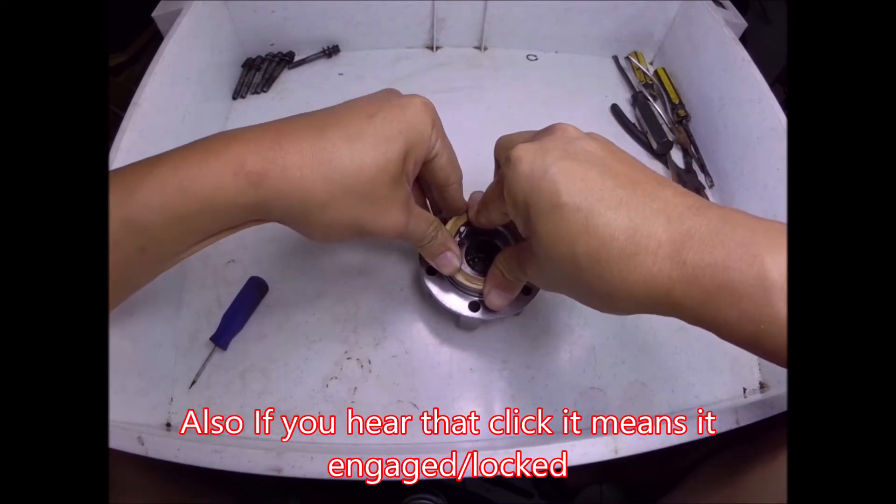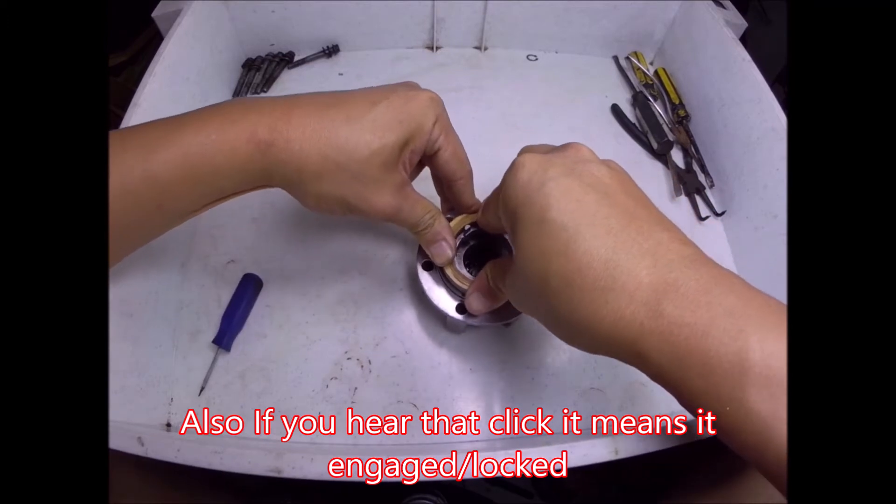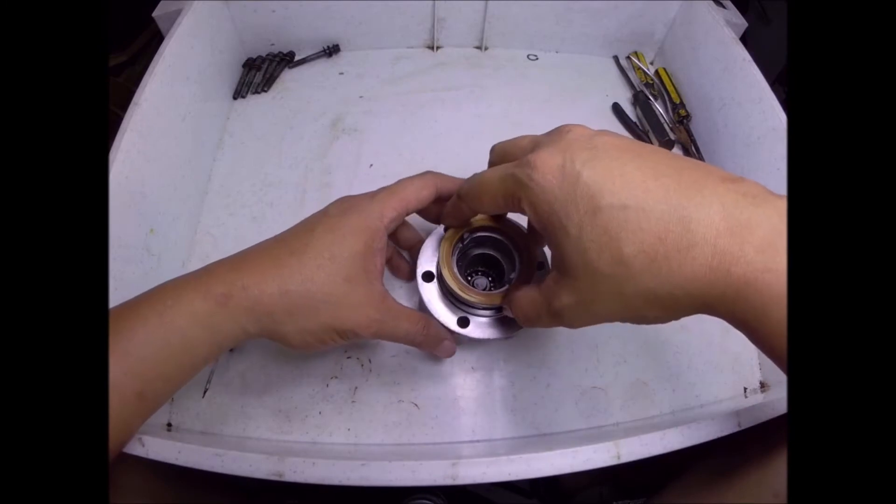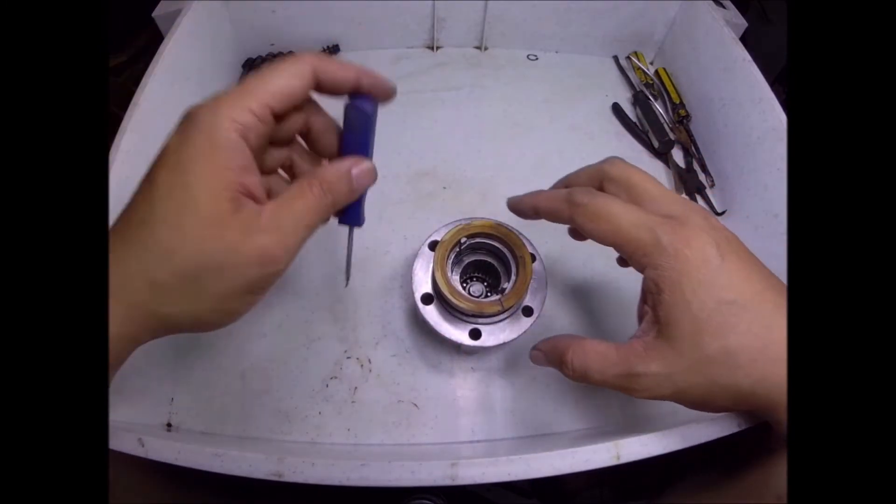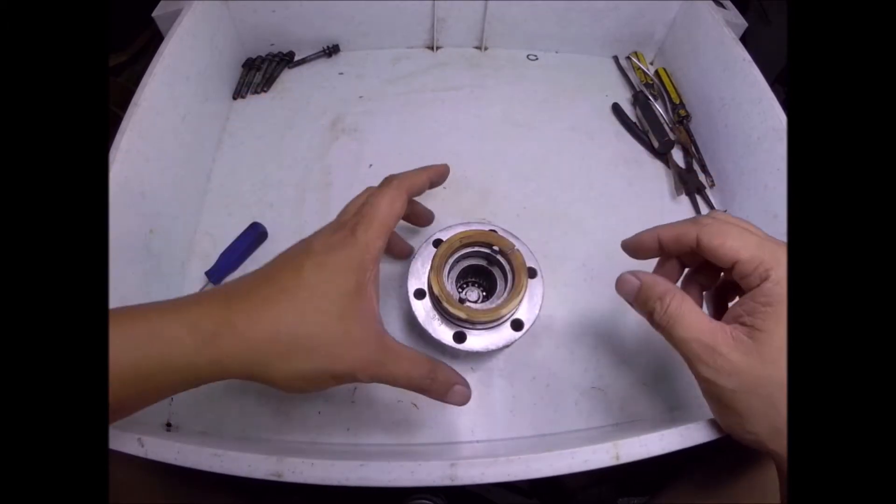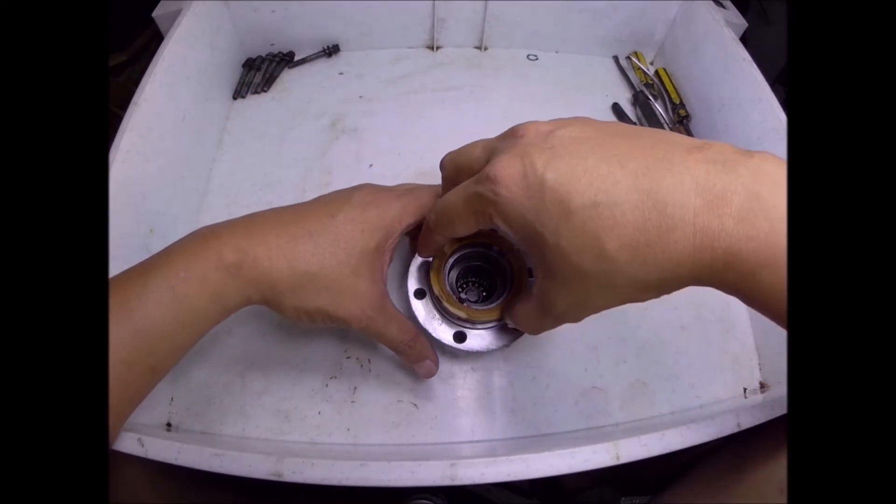There you go, then try to rotate. This part here rotates together with the housing of the 4WD locking hub, then it's in locked mode. You'll see here in disengage mode, if you try to rotate this, the body of the running hub doesn't rotate.